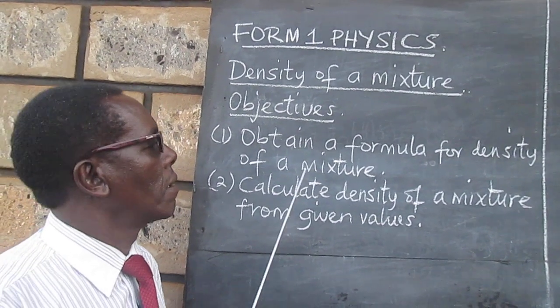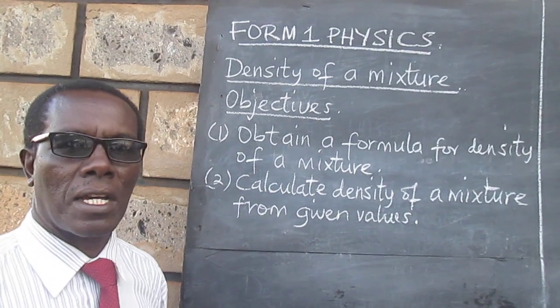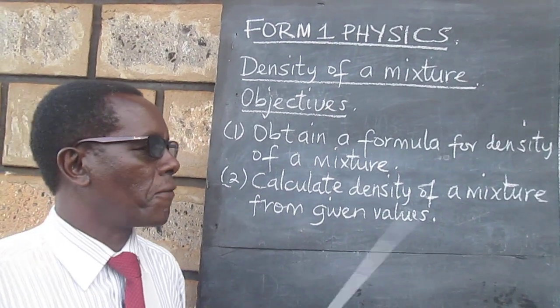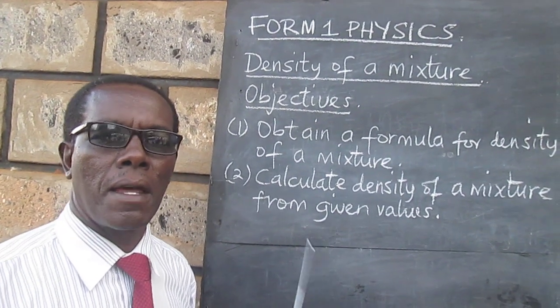We have two objectives. The first one, to obtain a formula for density of a mixture, and the second one, to use that formula in the calculation of the density of a given mixture.